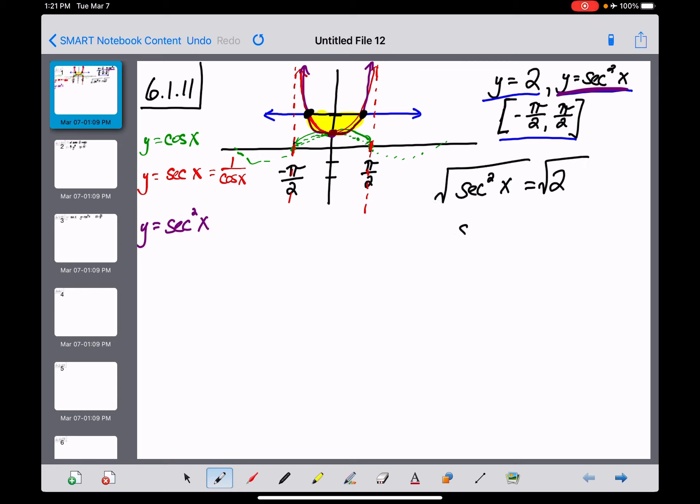Taking the square root of both sides gives secant of x equals root 2. Reciprocating both sides, cosine of x becomes 1 over root 2, or root 2 over 2. That means x is the inverse cosine of... hang on, I goofed up.